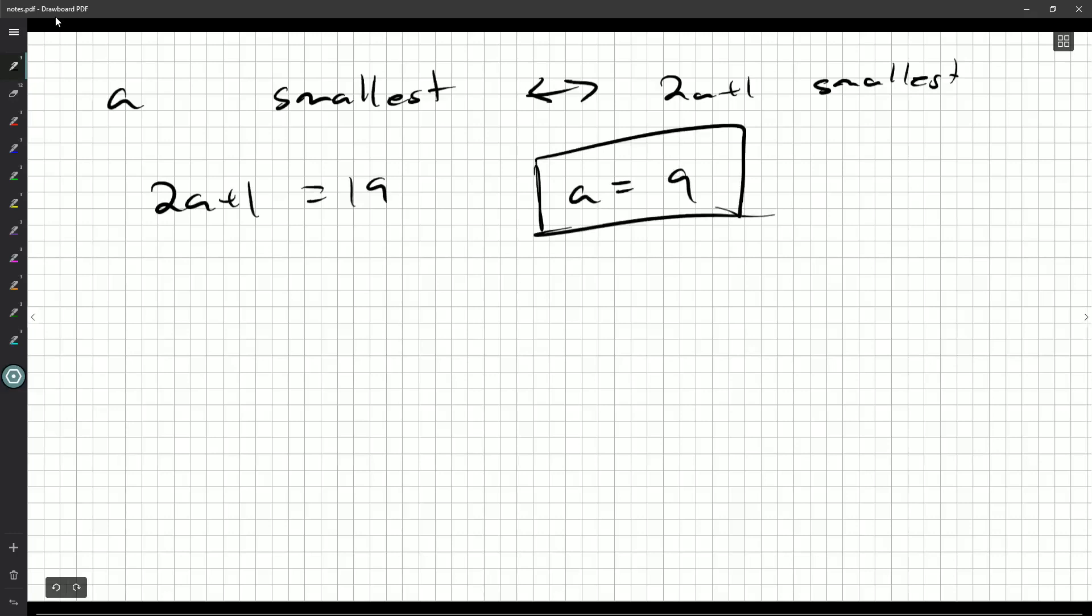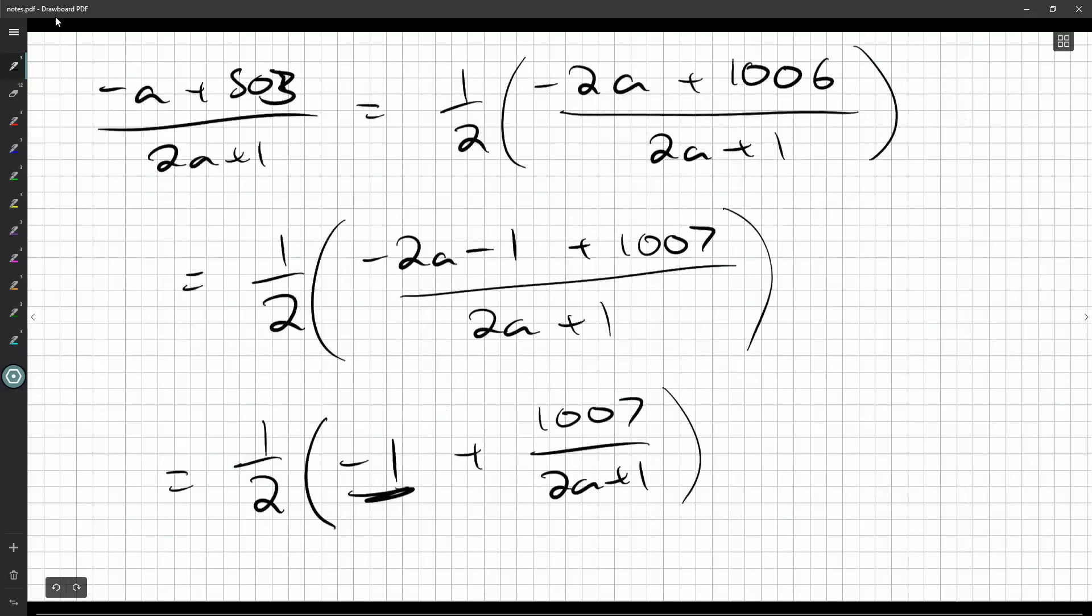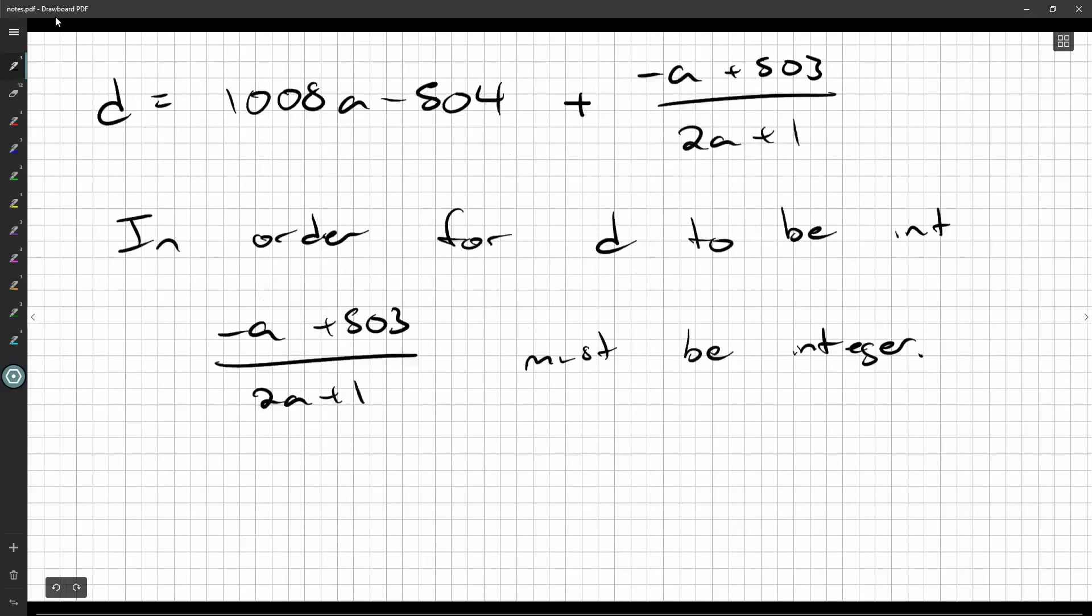Two a plus one can't be one. A is smallest when two a plus one is smallest. So two a plus one should be 19. A should be 18 over two. So a should be nine. So that should work. That'll make this part an integer, an odd integer. Subtract one from it. It'll be even. You can divide by two. So that'll be an integer. So this is an integer. So D would be an integer. So B would be an integer. And C would be an integer. And there we go.